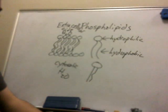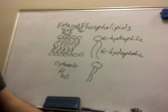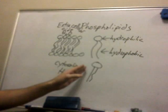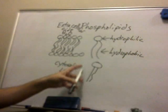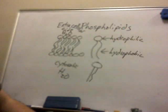The cell membrane has to maintain fluidity for a few reasons. One would be mobility — the cell membrane would not be able to perform endocytosis, exocytosis, phagocytosis, or pinocytosis. Also, intercellular proteins embedded in the membrane would not be able to move if the cell were rigid.